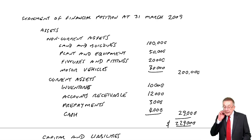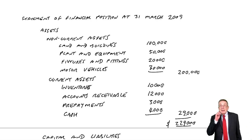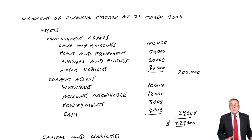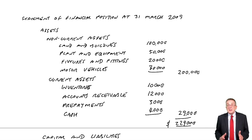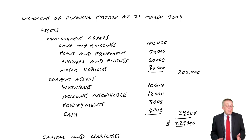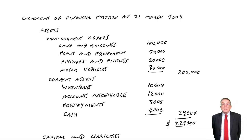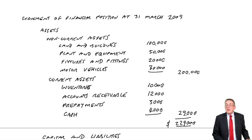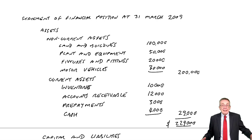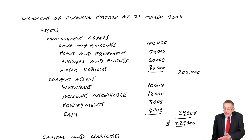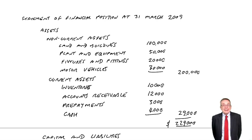First of all, look at the heading. It's the statement of financial position at a particular date. By law, you've got to do it once a year — some companies might do it every month, but once a year is required. The business can choose its own year end, so it doesn't always have to be 31st December. This business has decided to do it every 31st of March — that's the business's year end.